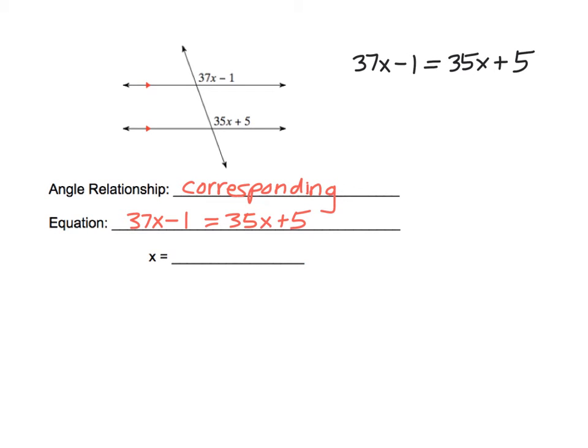Since we have a variable on both sides, let's start by moving all variables to one side. We can do that by subtracting 35x from both sides. And when we do that, we get down to 2x minus 1 equals 5.